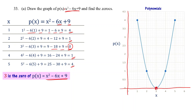For p(x) = x² - 6x + 9, the zeros are (3, 3) — actually these are two zeros but identical ones. Otherwise we say that 3 is the zero of p(x). Substitute x = 3 into the given equation and see whether the value comes out to zero or not.